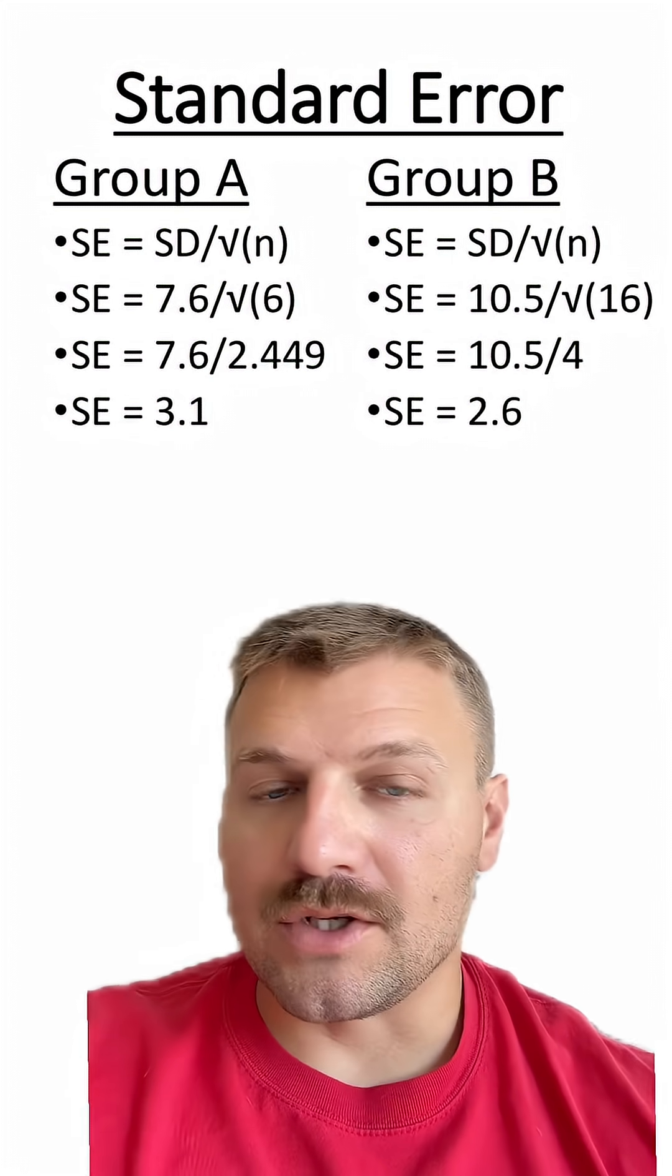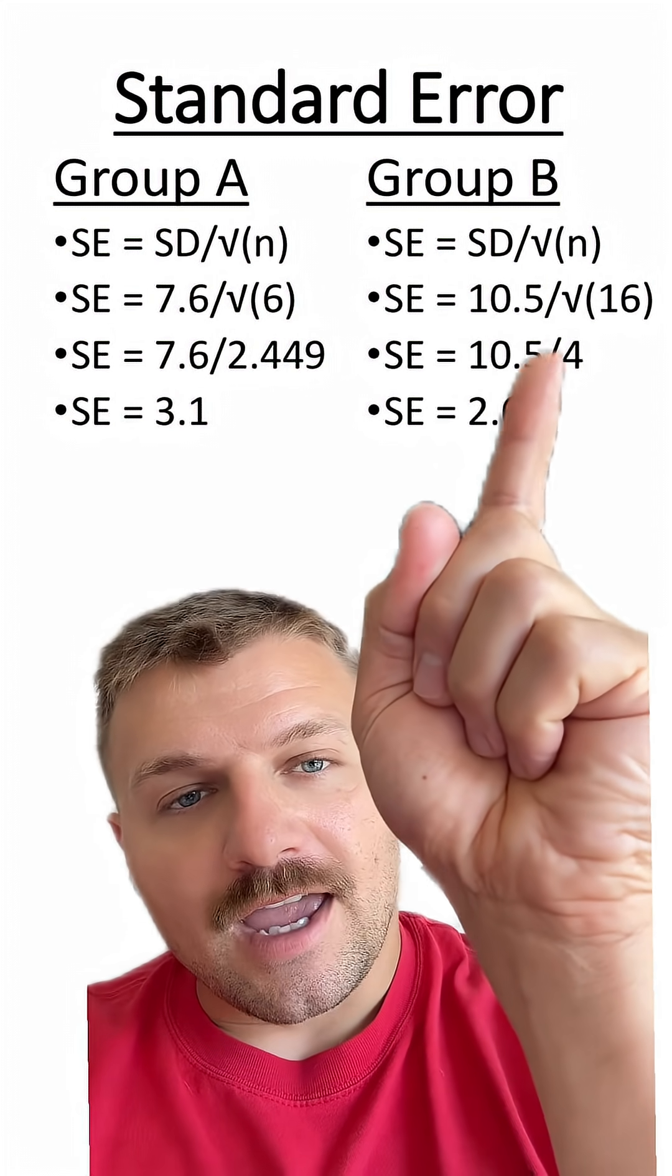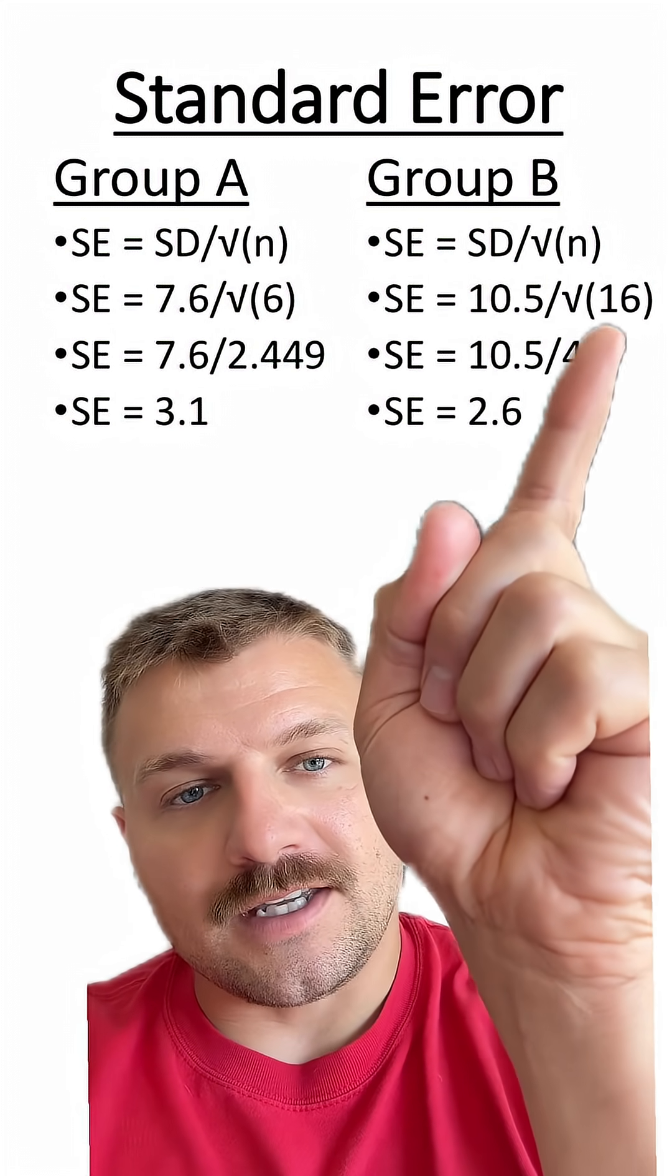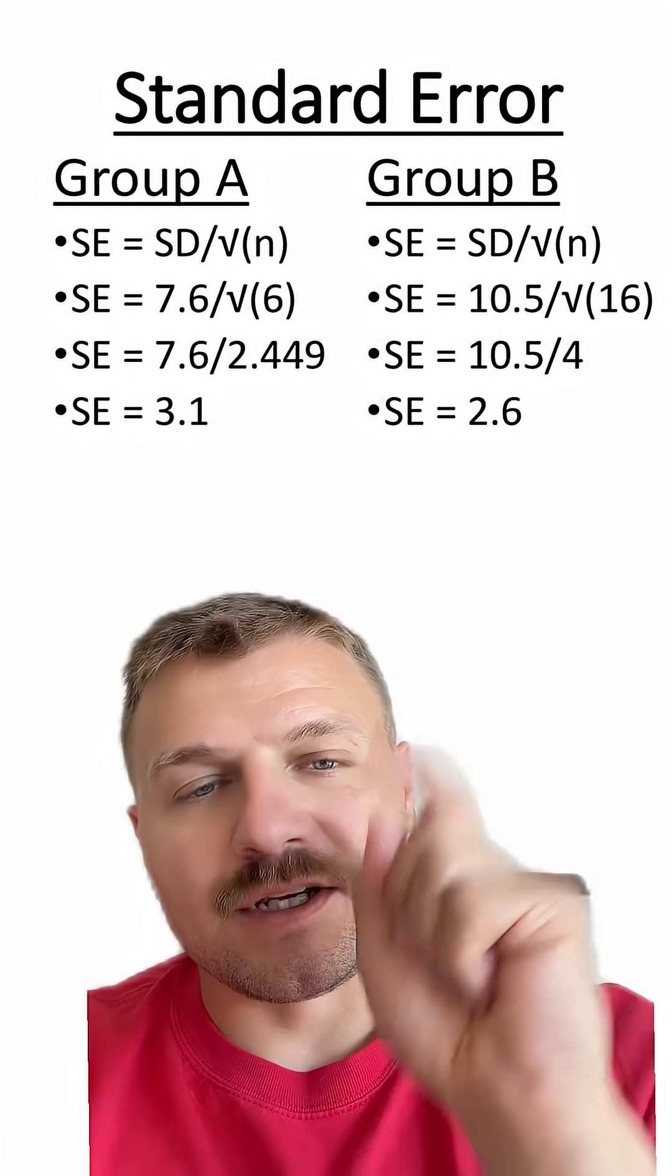For Group B, we do the same method. The standard deviation was 10.5, and our number of data points was 16. So we take 10.5 divided by 4, and we get a standard error of the mean of 2.6.